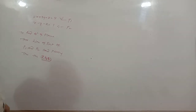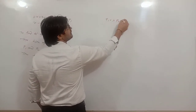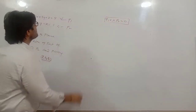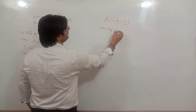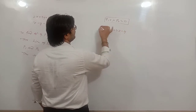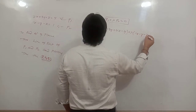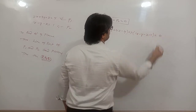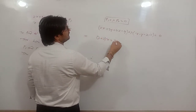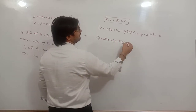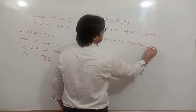So P1 plus lambda P2 equal to zero is the equation of the required plane. That means: 2x plus 3y plus 4z minus 4, plus lambda times of x minus y minus z minus 1, is equal to zero. This becomes: (2 plus lambda)x plus (3 minus lambda)y plus (4 minus lambda)z minus 4 minus lambda equals zero.